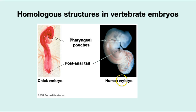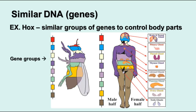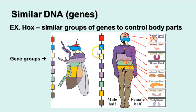Here we see some similarities between chick embryos and human embryos. It points out the pharyngeal pouches — we'll talk more about this when we discuss vertebrate animals — and the post-anal tail. Both are characteristics of chordates, and you can see they're similar in the chick and in the human embryo even though they end up being very, very different. There are also similarities in DNA: groups of genes called Hox genes that control different parts of the body are very similar in the fruit fly and in humans, controlling the same relative parts of the body.